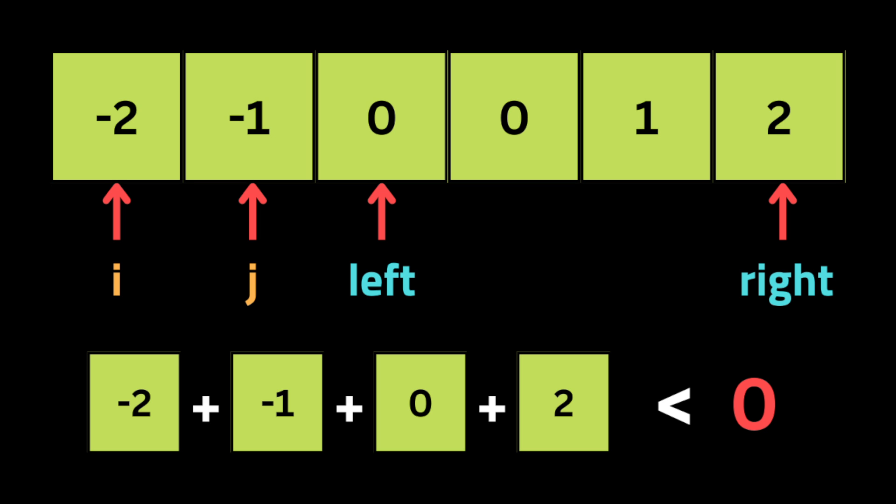We're going to loop through the input list two times so we can have four pointers inside the list. The index of the first loop points at the first number, and the nested loop index points at the next number after the first index. We initialize two pointers, left and right — the left pointer pointing after the inner loop variable, and the right pointer pointing at the end of the list. At each iteration, we sum up the four pointer values and check if the sum equals the target.